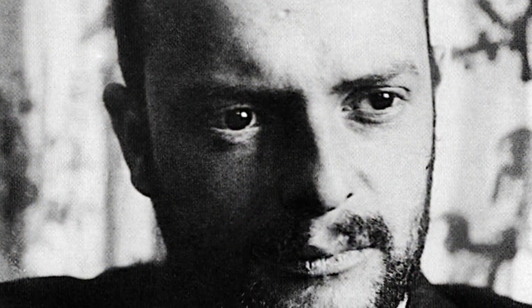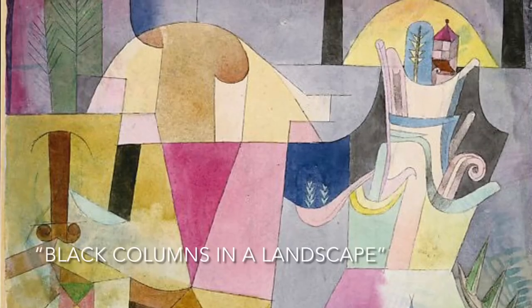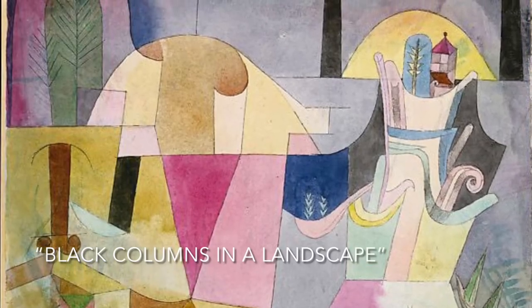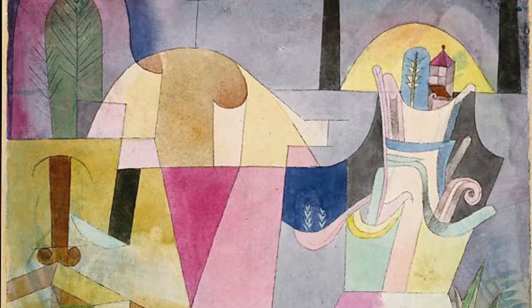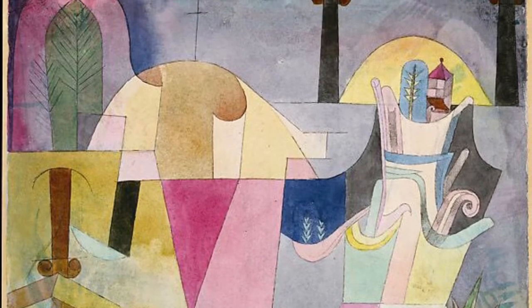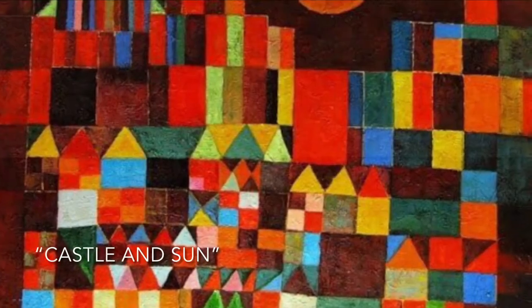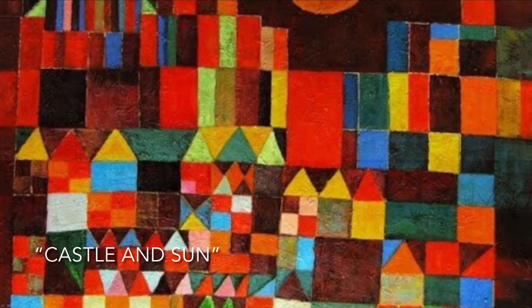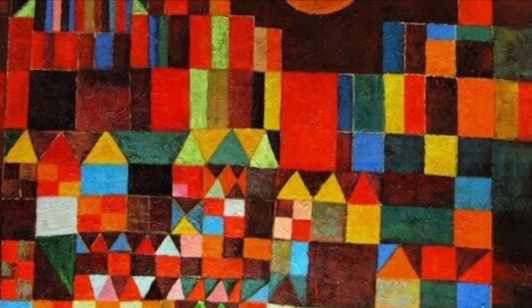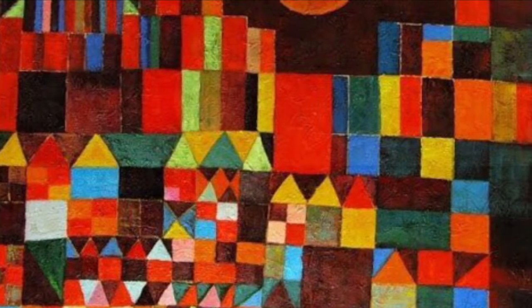Paul Clay was a Swiss German artist who was born in 1879. When Paul Clay was a child he was trained to become a violinist but he decided to become an artist instead. He was very interested in color theory, which is how colors relate to one another, and so he used a lot of color in his paintings like castle and sun.